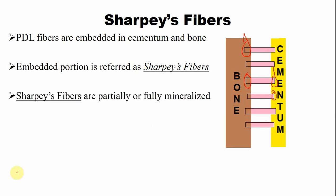These Sharpey's fibers are either partially or fully mineralized. This embedded portion is either partially or completely mineralized. For example, this is the section of the embedded portion of the periodontal ligament fiber bundle — it is either mineralized at the periphery, or sometimes it is completely mineralized.